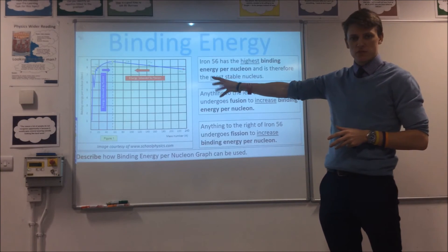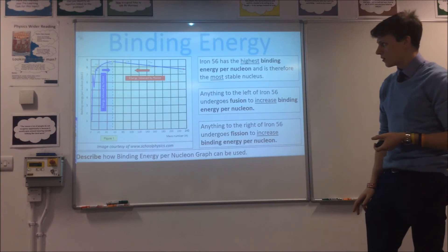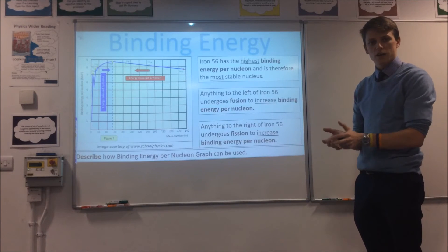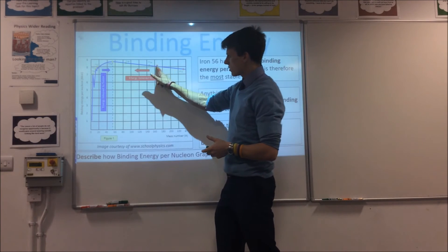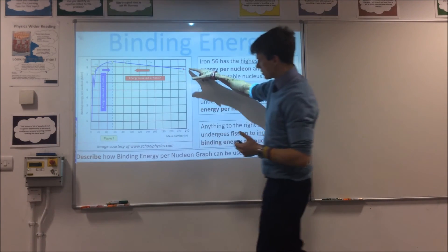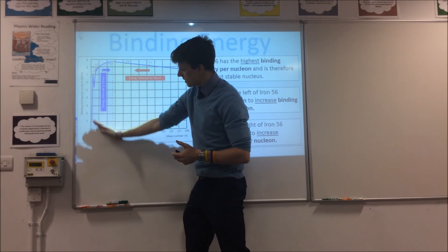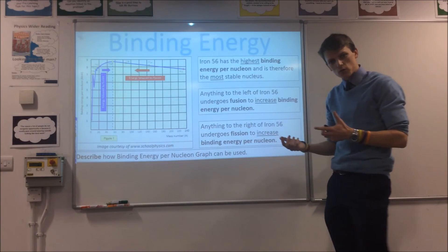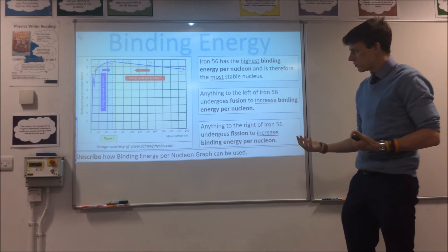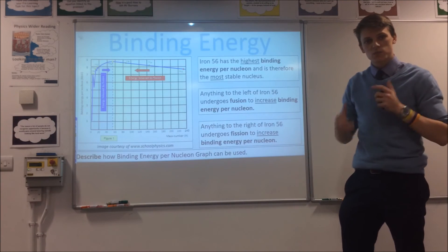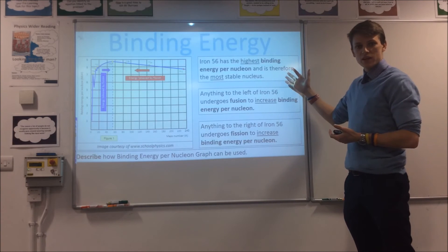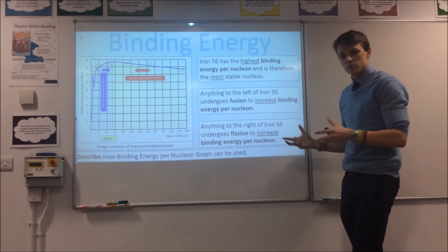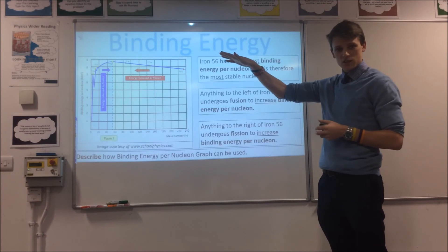There's a graph you'll come across in books on fission and fusion. It shows two zones: the fusion zone and the fission zone. Anything on the heavy side wants to undergo fission because that would increase its binding energy per nucleon. Anything on the light side wants to undergo fusion for the same reason. They're all heading towards the golden zone — iron-56, which has the highest binding energy per nucleon of all elements from a nuclear physics perspective. Fission and fusion are the processes by which nuclei try to reach that point.